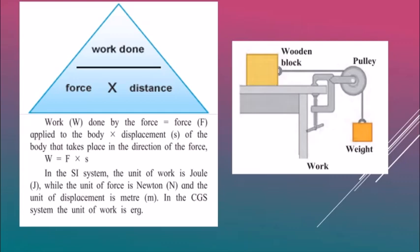Work done by a force equals force multiplied by displacement: W = F × s, where s is displacement. Always remember this formula. In the SI system, the unit of work is the joule, the unit of force is the newton, and the unit of displacement is the meter — so 1 joule equals 1 newton-meter. In the CGS system, the unit of work is the erg.